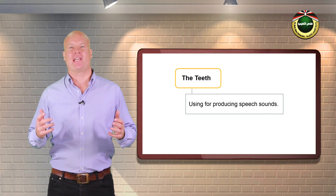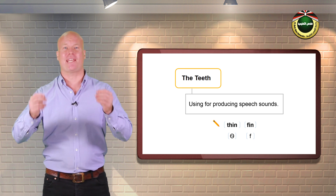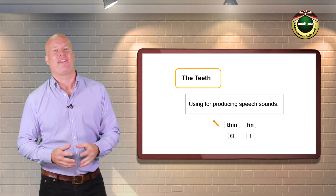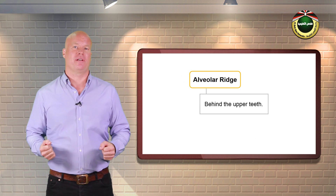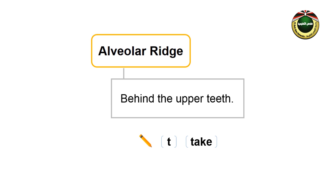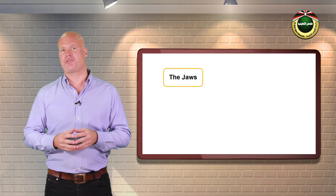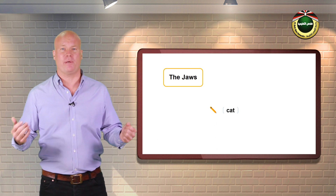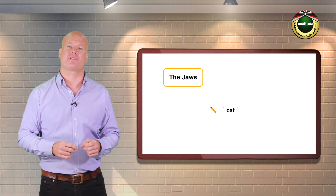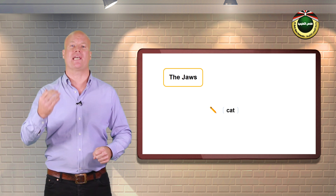The teeth — in fact, we use the upper teeth only when producing speech sounds. Try to say thin or fin: th and f. The alveolar ridge is behind the upper teeth. Some sounds are produced when the tip of the tongue is pressed against or approaches it. Say t as in take. The jaws are not directly involved in the production of speech sounds. Only the lower jaw can be raised and lowered during the production of certain sounds. Say and notice how your lower jaw is lowered when you say cat.